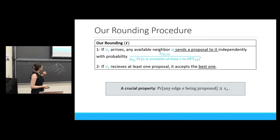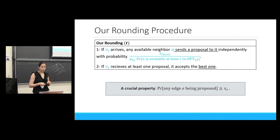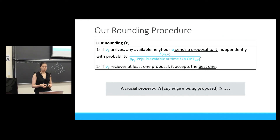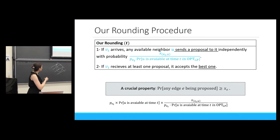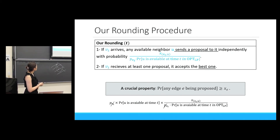A crucial property of our algorithm is that any edge e will be proposed with probability at least x of e. This means that if some online vertex has only one edge, that edge will join the matching with probability exactly x of e. The edge will be proposed if the online vertex arrives, the offline vertex is available at that time, and the proposal happens — and these terms cancel out. It is not difficult to see that our algorithm does not overmatch a vertex, meaning the probability of u being available at time t is not larger than the corresponding LP quantity.